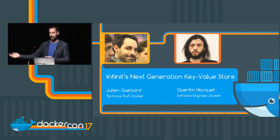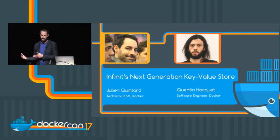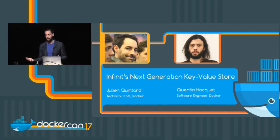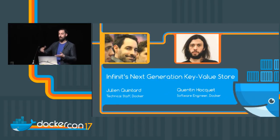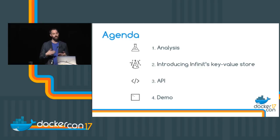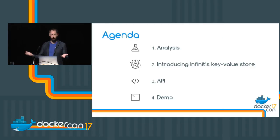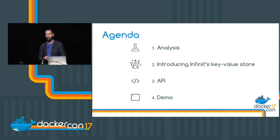My name is Julian. I was CEO at the company Infinite, and I'm here to talk about key value stores. In particular, I'd like to explain why the existing key value stores may be limited for some applications, and how we could design a new generation of key value stores to overcome those limitations. We'll study why there are limitations before introducing Infinite's key value store, which we've designed and are developing. Then I'll introduce the API, and we'll do a demo of deploying Infinite's key value store over a Docker Swarm.